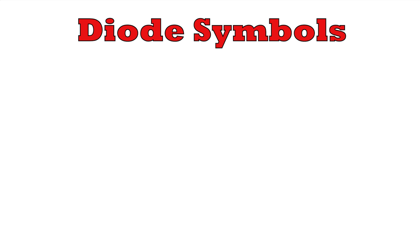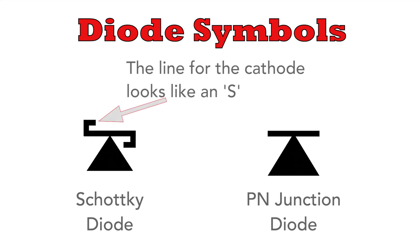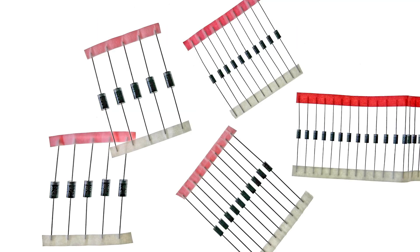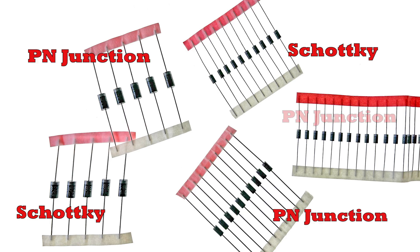These diodes are indicated on circuit diagrams by this symbol, which is slightly different to that of an ordinary PN junction diode. The cathode line has additional tags on it, making it look like an S — S for Schottky. But the diodes themselves look very similar; apart from the part numbers, they're impossible to tell apart just by looking at them.